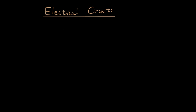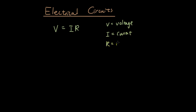Today we're going to try and explain the meaning behind this equation V equals IR. In order to understand V equals IR: V is the voltage, I is the current, and R is the resistance. I need to provide you guys another model for understanding an electric circuit.